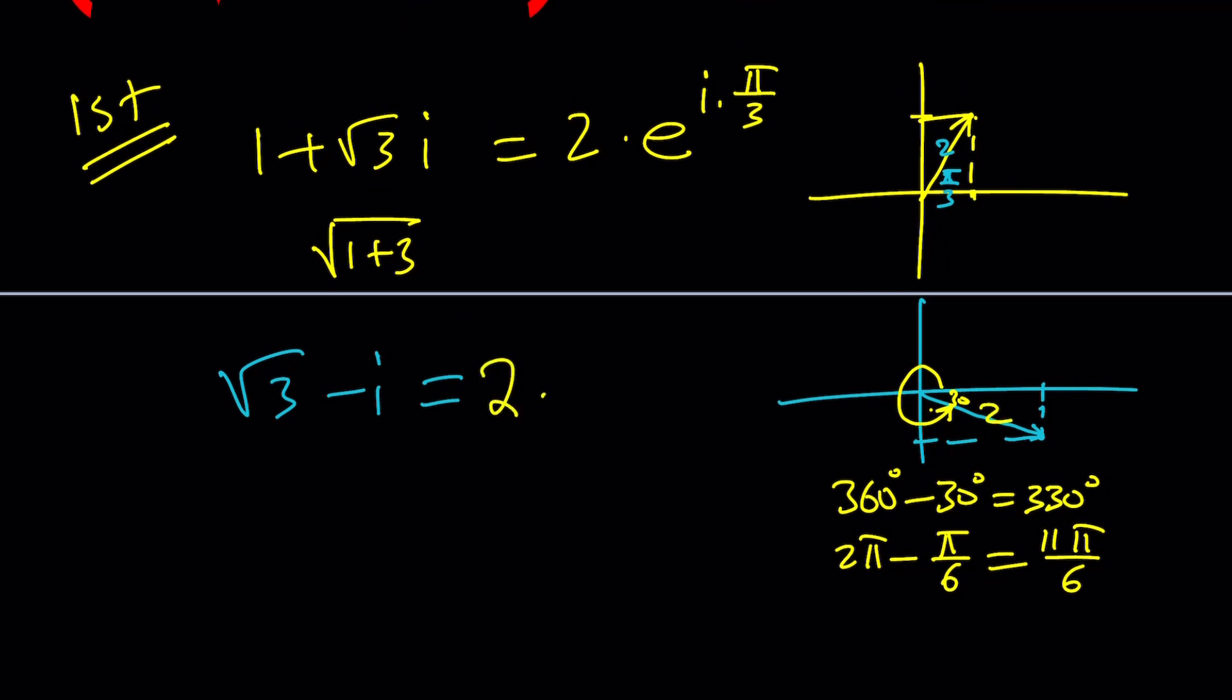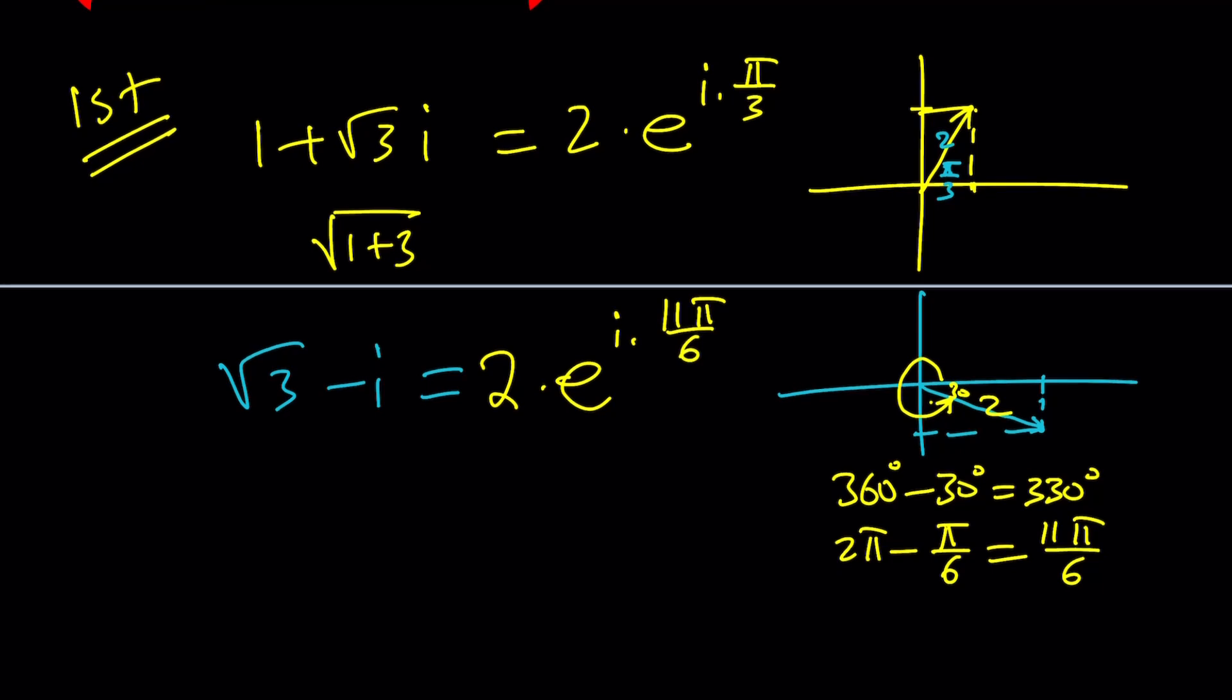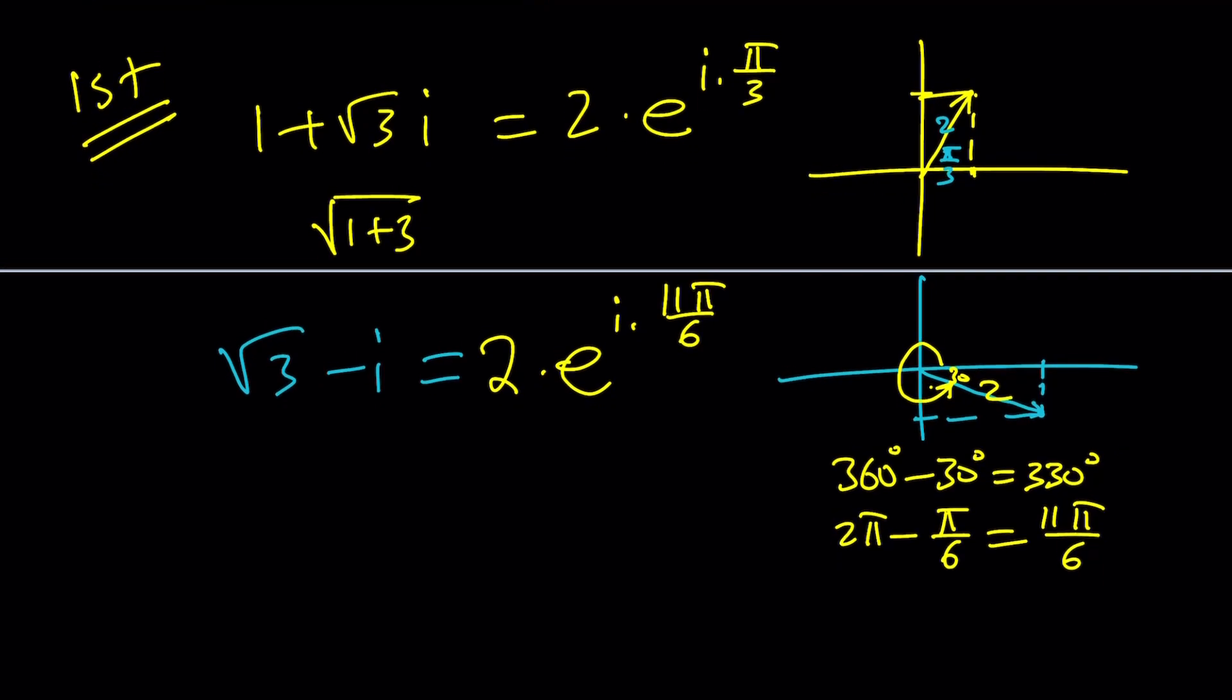So what we're going to do now is, to divide these numbers, we're going to divide the polar forms: 2e^(iπ/3) divided by 2e^(i11π/6). But then the whole thing needs to be raised to the 8th power.